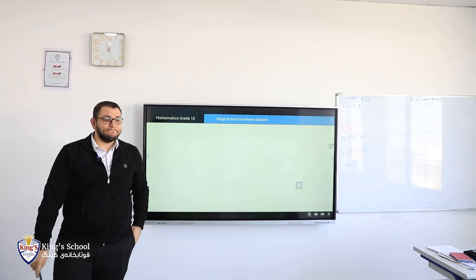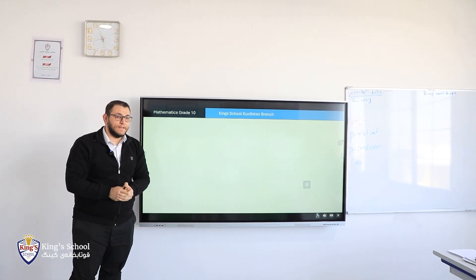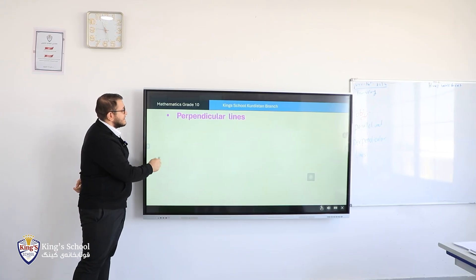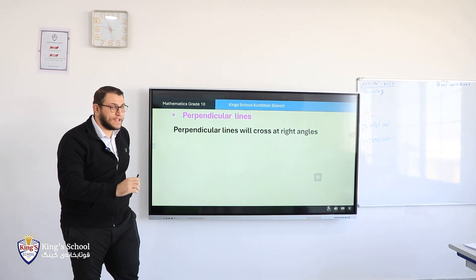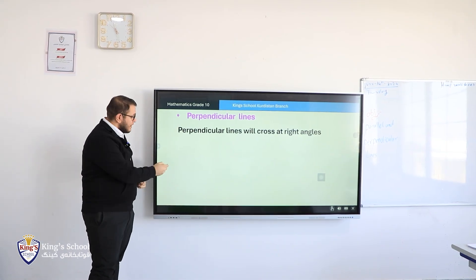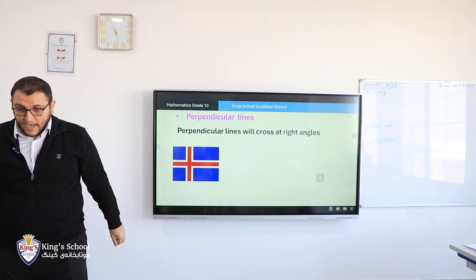Perpendicular. Sultan? Two lines that intersect at a 90 degree angle. They intersect in a 90 degree angle. Excellent. They intersect exactly in right angles, or 90 degree angles, right? Right angle means 90 degrees. For example, what's this flag? Iceland.